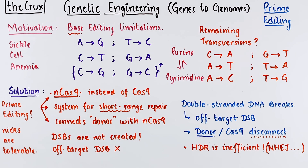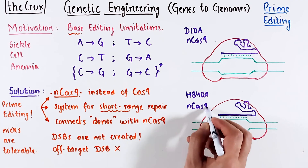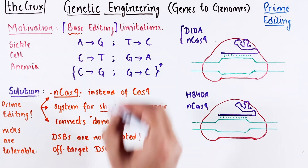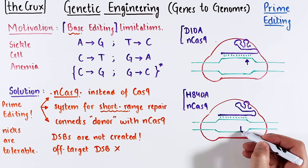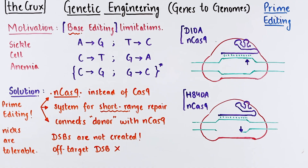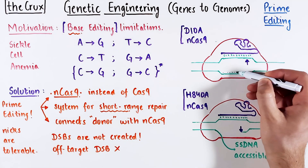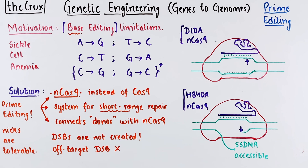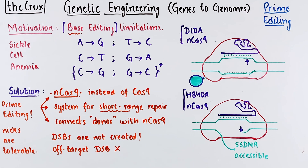Double-stranded DNA break repair can be error-prone. There are two versions of nCas9: in base editing, the D10A version nicks the pairing strand of the DNA. In contrast, prime editing relies on the H840A version, which nicks the non-pairing strand. This means a short 17-nucleotide single-stranded DNA with a free 3' end is available for potential action. In the D10A version, you get single-strand DNA but not an open 3' end. In base editing the key enzyme is a deaminase; in prime editing, it is a reverse transcriptase.